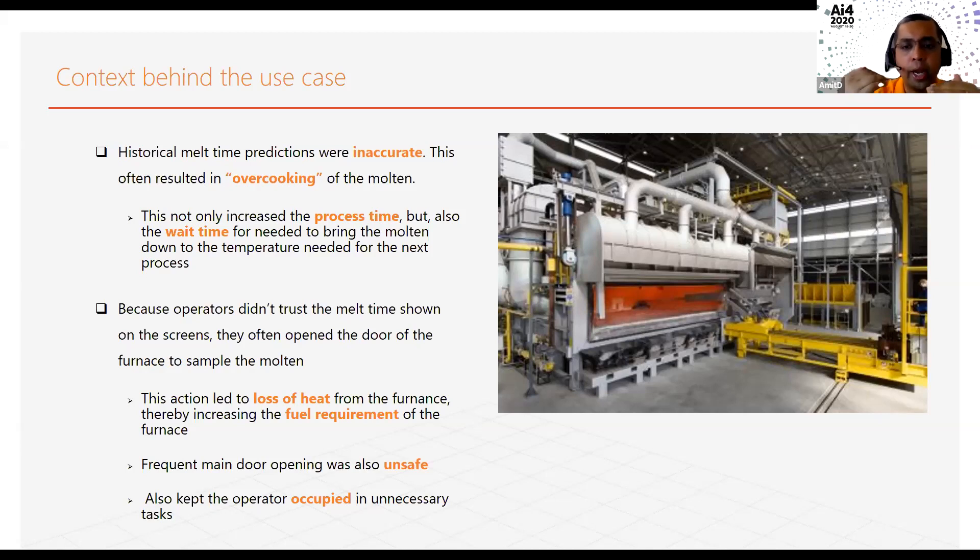Because the model predictions were inaccurate, the operator did not trust them, and they kept on opening the door of our furnaces to take sample and check whether the aluminum has molten. That created two main issues. One is, whenever you open the door, a lot of the heat gets lost, and that affects our fuel efficiency. The second is when you open the door it's quite unsafe. There is a safety hazard in this operation. Finally, it kept our operators busy with unnecessary tasks.